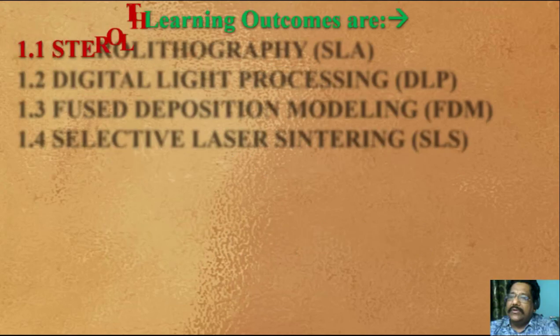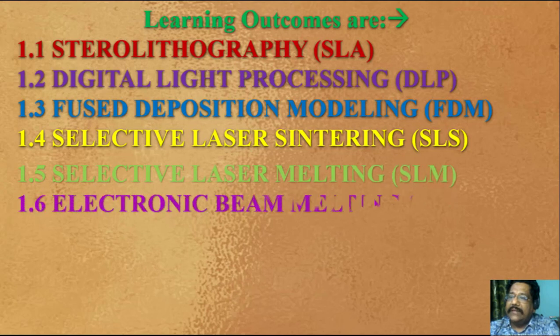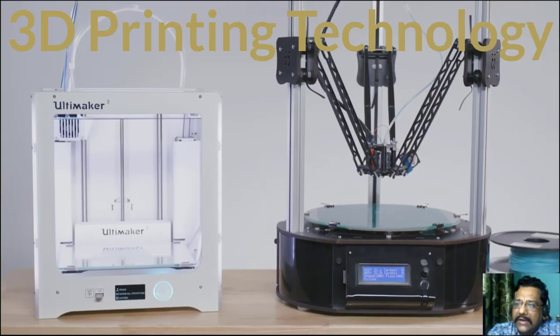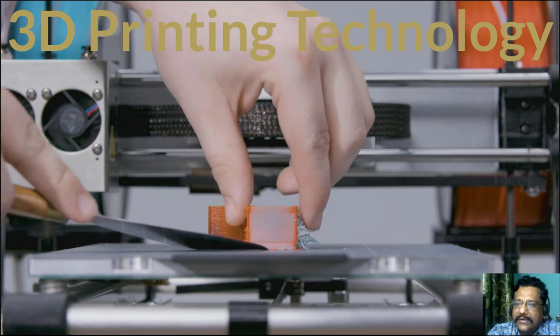After the completion of this lecture, the learning outcomes are you'll know about SLA, DLP, FDM, SLS, SLM, EBM, LOM, BJ, and MJ.